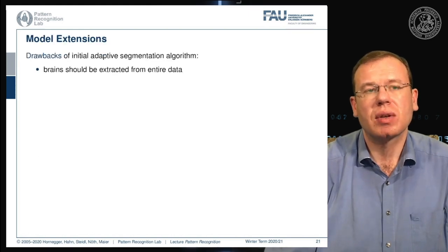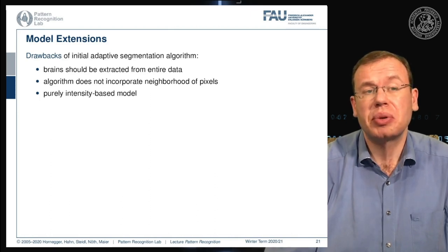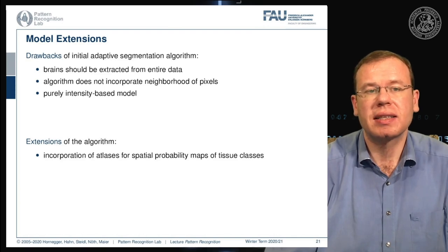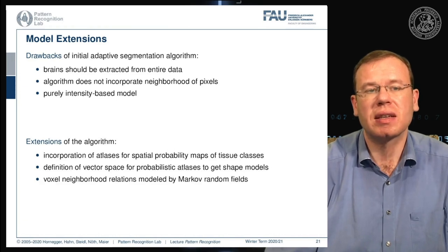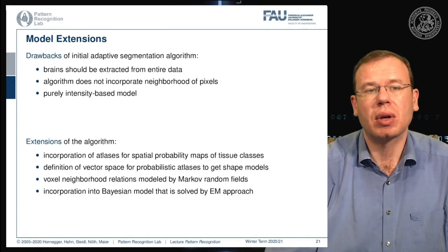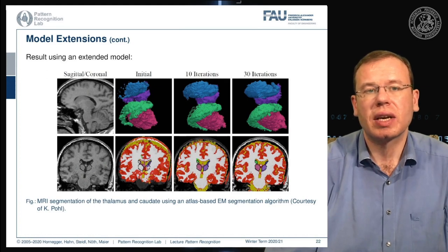There are some drawbacks: brains need to be extracted from the full data, the algorithm does not incorporate pixel neighborhoods, and it is a purely intensity-based model. Extensions include introducing atlases for spatial probability maps of tissue classes, defining a vector space for a probabilistic shape model, and modeling voxel neighborhood relations using Markov random fields. All of this can be incorporated into a Bayesian model solved using an EM-type approach, yielding much better segmentations — as shown in work by Kilian Pohl.